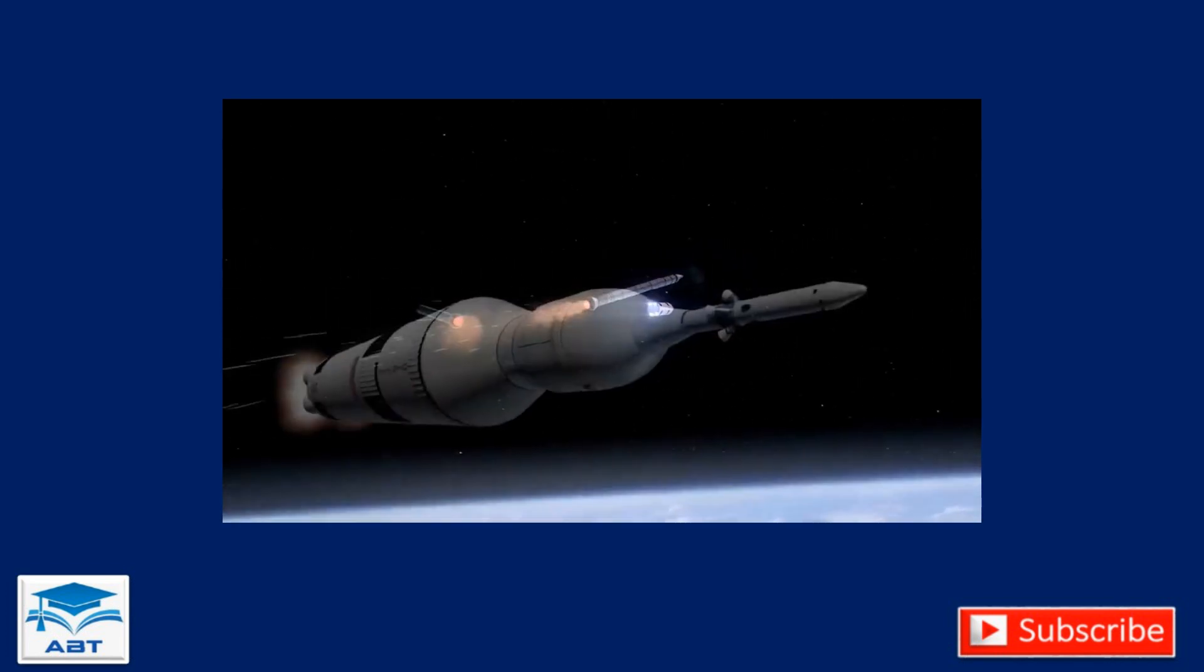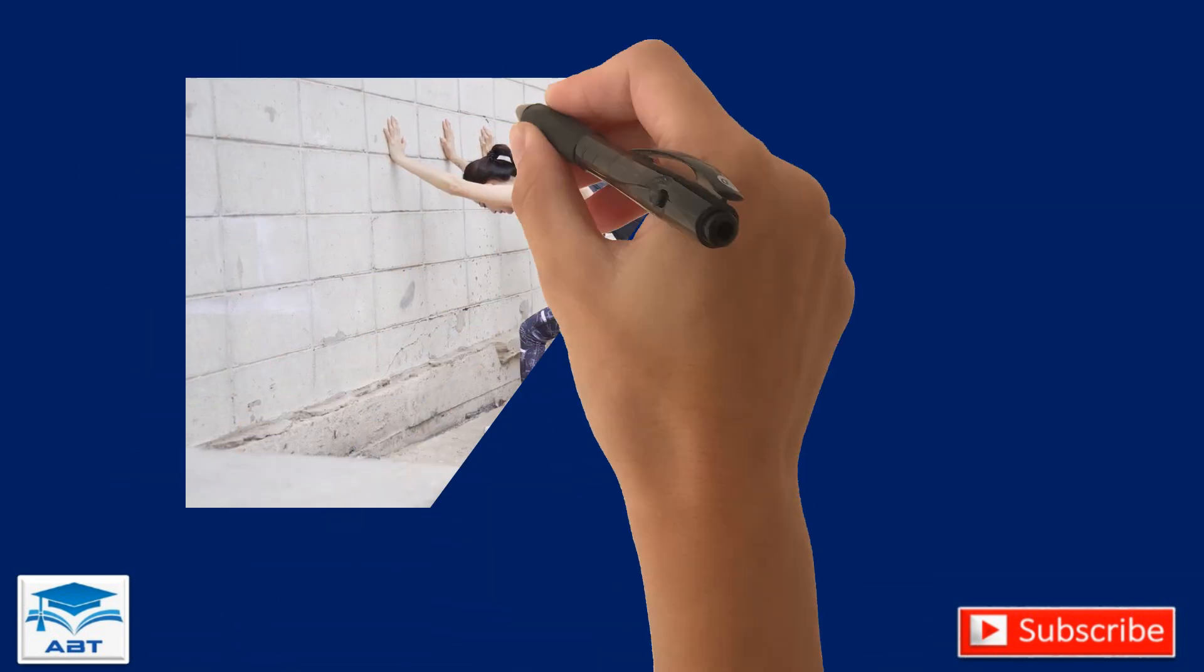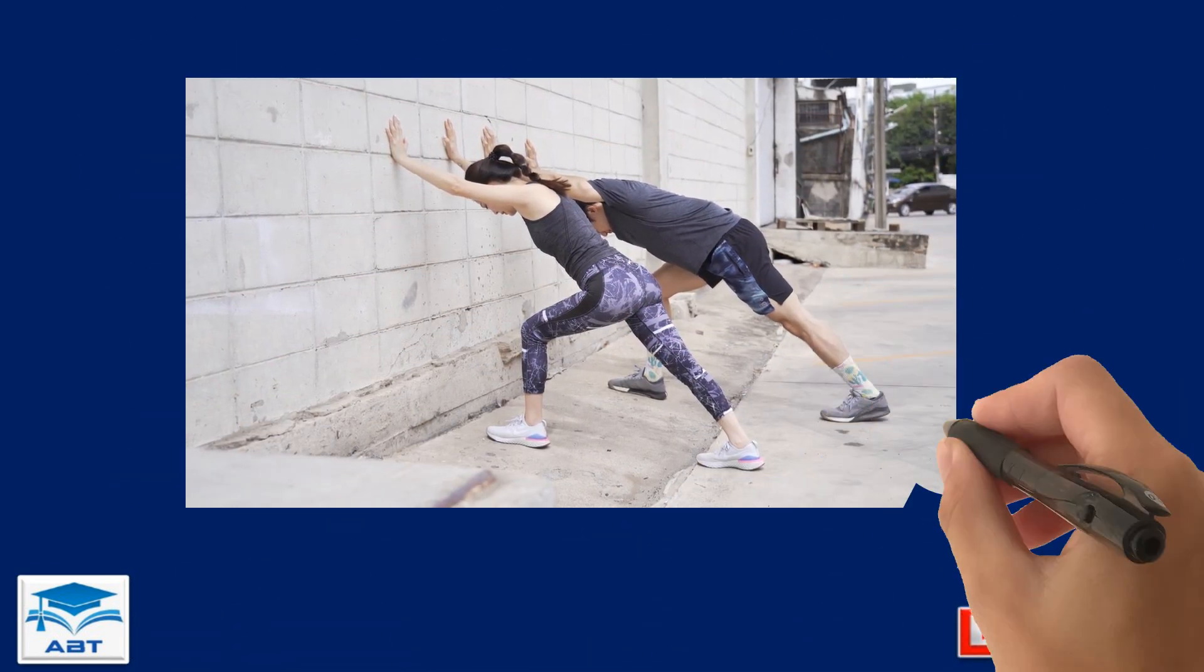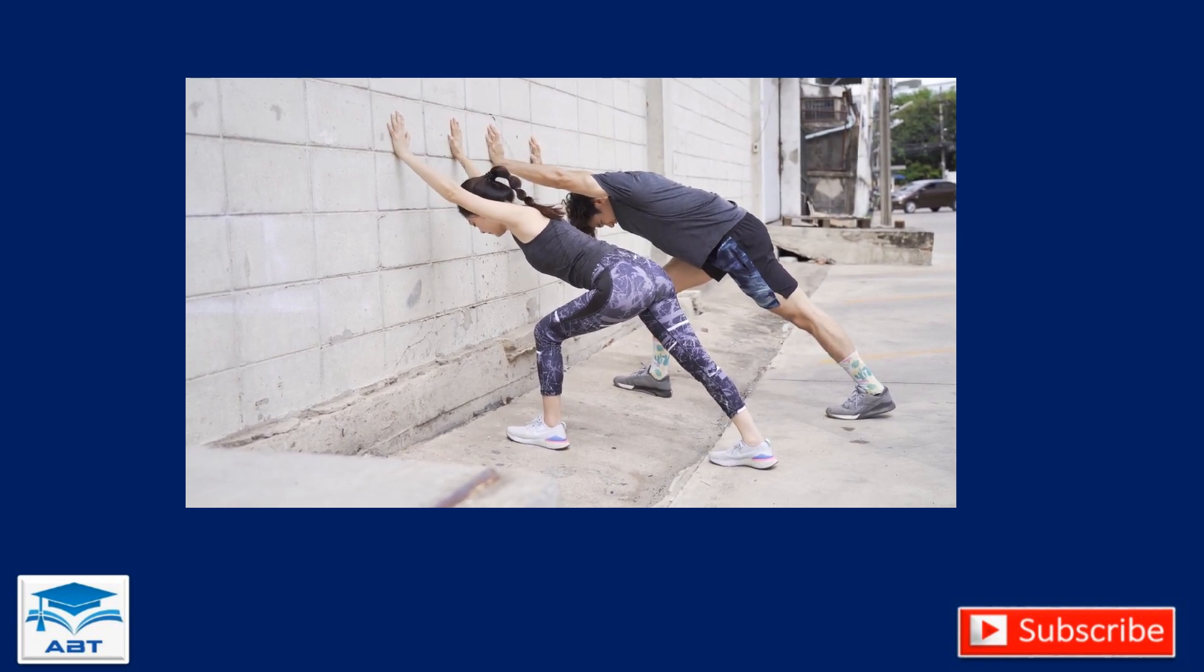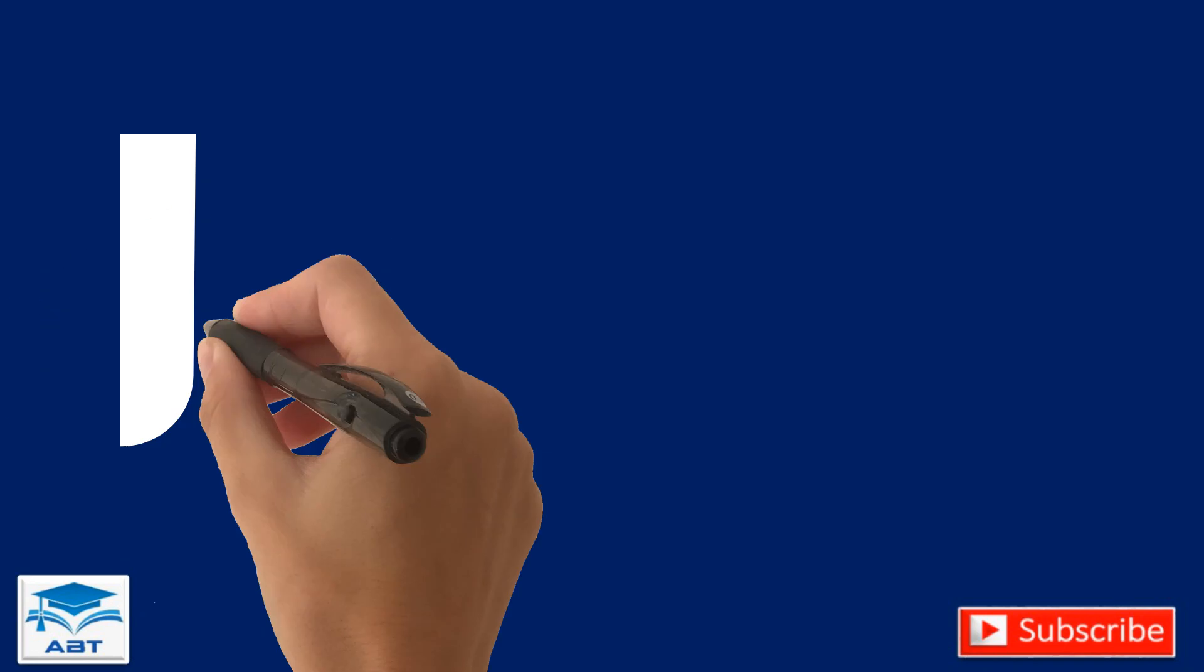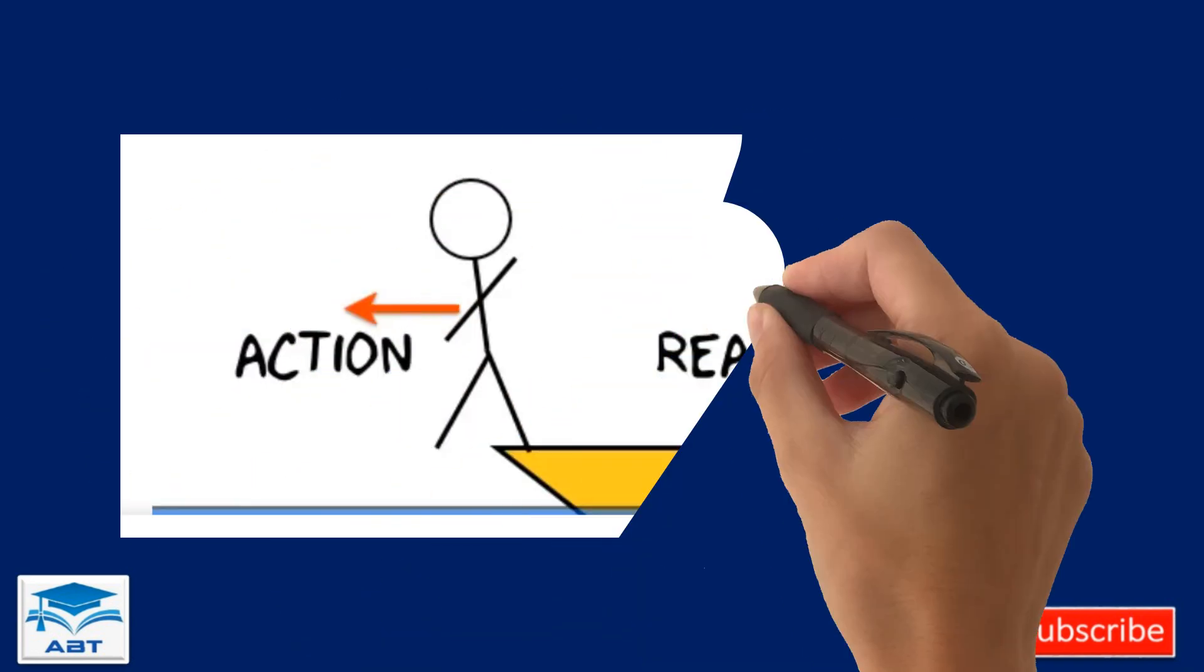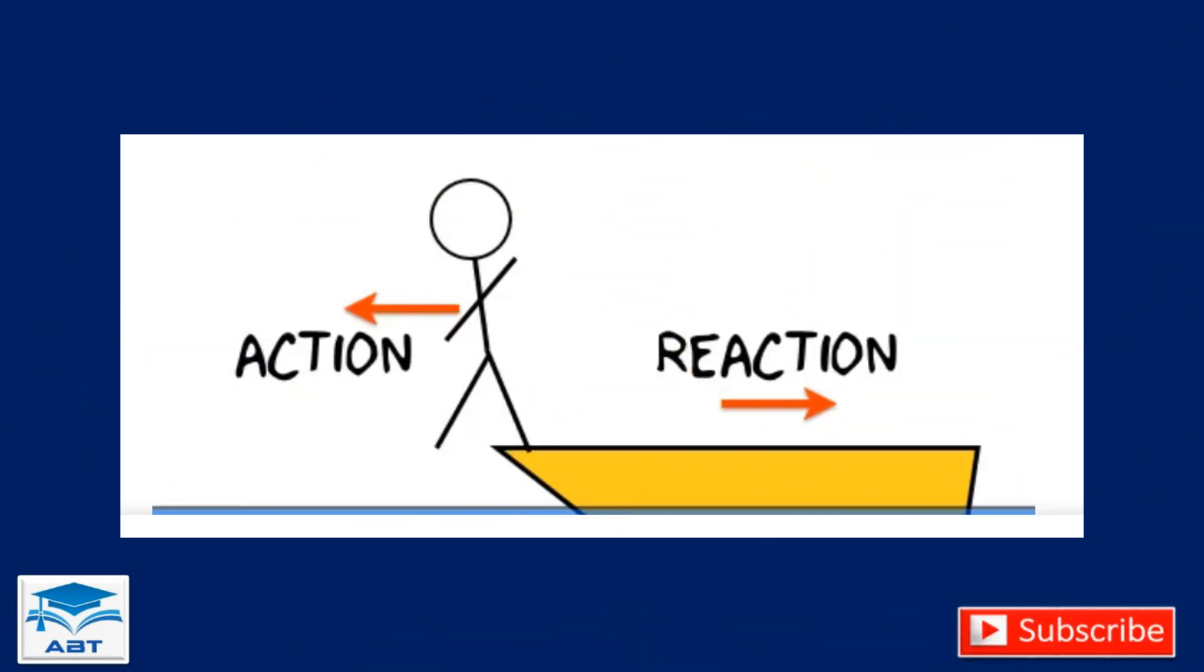For example, if you push against a wall, the wall pushes back against you with the same force. Even though neither you nor the wall may move, both forces are equal in magnitude but opposite in direction. This law explains how objects interact with one another through forces.